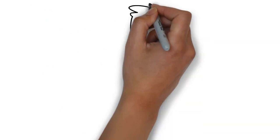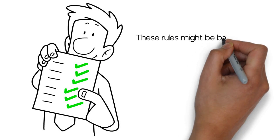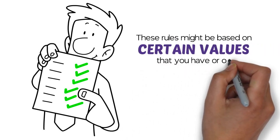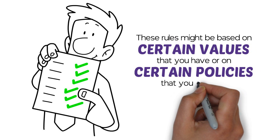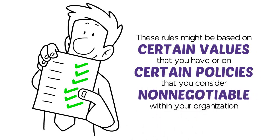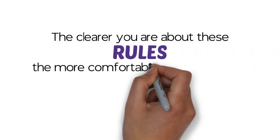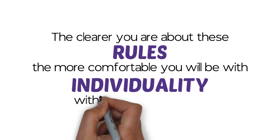Make a list of consistent rules by which you can live by. These rules might be based on certain values that you have or on certain policies that you consider non-negotiable within your organisation. Counterintuitively, the clearer you are about these rules, the more comfortable you will be with individuality within these boundaries.